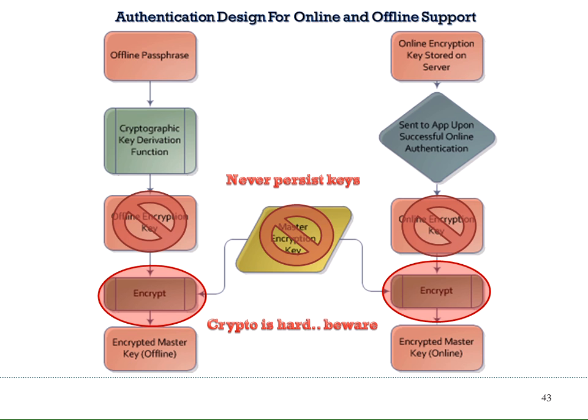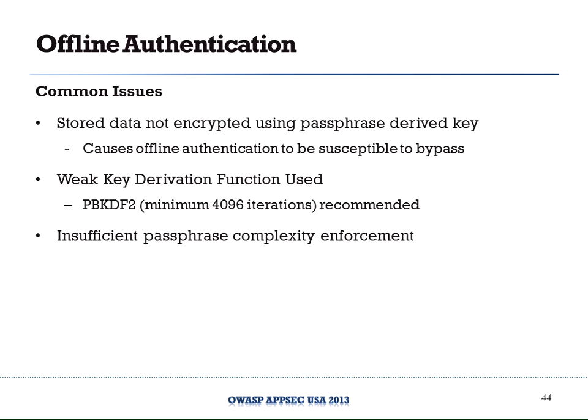Encryption is hard, so always have it inspected by a security professional. The main common issues we've seen in offline encryption modes include weak key derivation functions. A lot of times we see people just passing the passphrase through a hashing function, assuming they get proper key length for AES — but in reality, you're making yourself susceptible to brute force. We recommend PBKDF2 with a minimum of 4,096 iterations. It's a somewhat slow function designed to generate the encryption key, which makes offline brute forcing much harder.